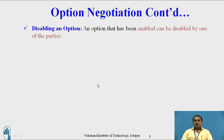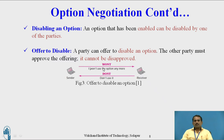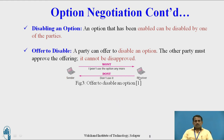Disabling an option: an option that has been enabled can be disabled by one of the parties. Offer to disable — a party can offer to disable an option; the other party must approve the offering, it cannot be disapproved. The client sends 'I WON'T use the option anymore,' and the receiver sends 'I DON'T use it,' directly closing the option or communication. If the client doesn't want to communicate with the server, the server can reply 'DON'T continue the communication or connection.'